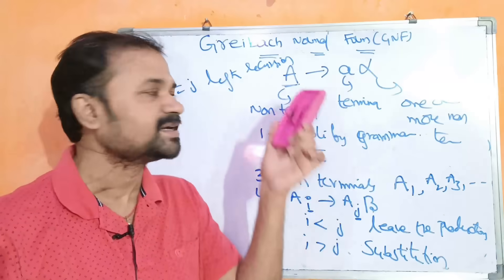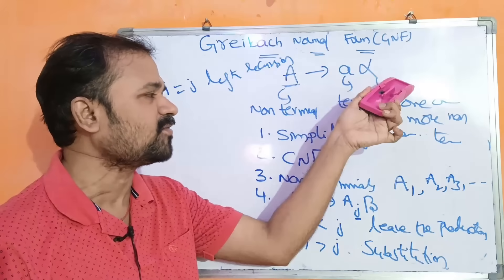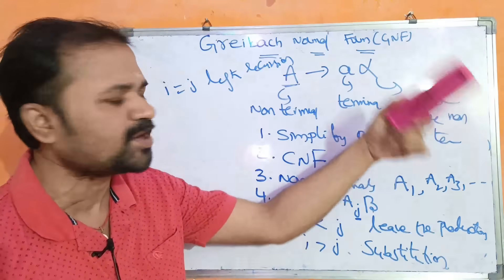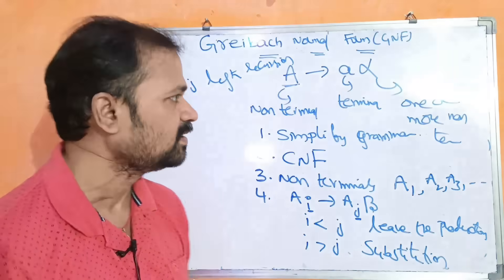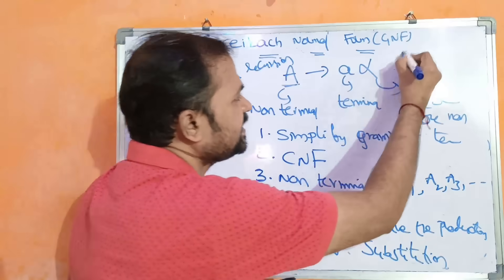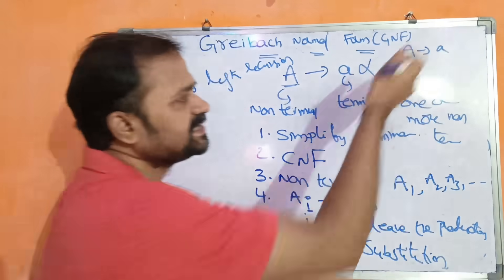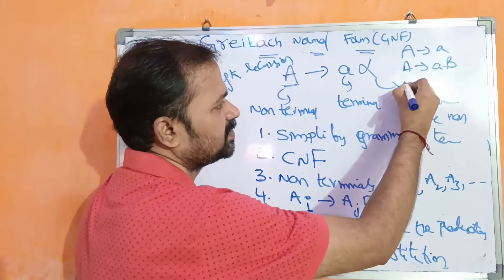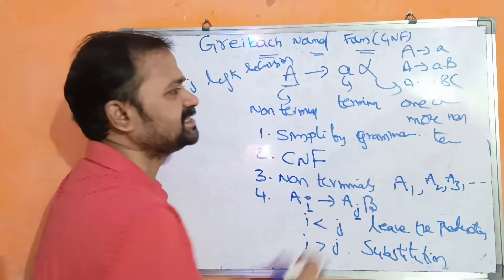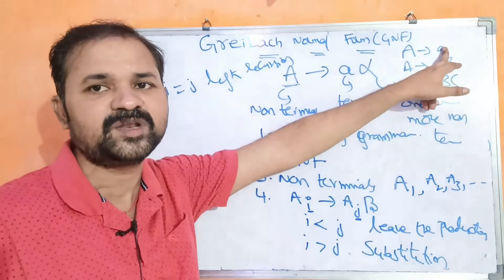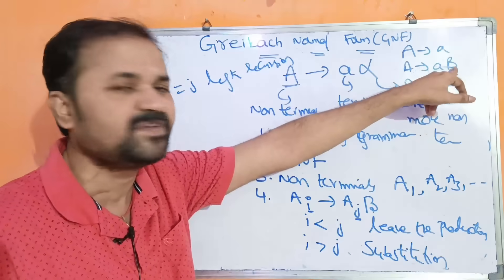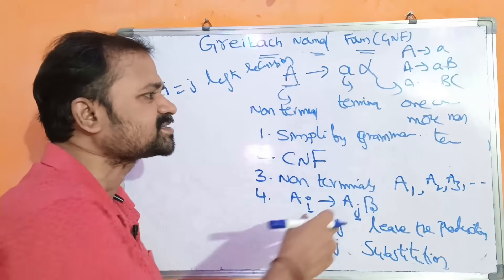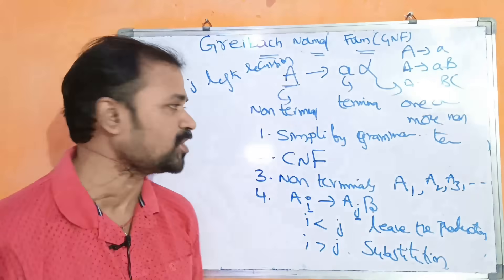GNF form means capital A implies small 'a' alpha — non-terminal implies terminal followed by zero or more non-terminals. For example: A implies 'a' is in GNF form; A implies 'a'B is in GNF form; A implies 'a'BC is in GNF form. Here alpha means zero or more non-terminals.